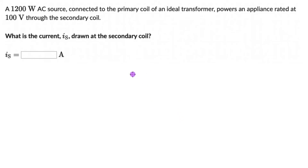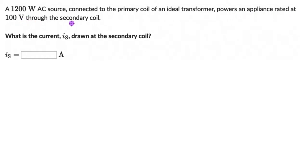Let's solve a couple of questions on transformers. Here we have a 1200W AC source which is connected to the primary coil of an ideal transformer, and that powers an appliance rated at 100V through the secondary coil. The question is to figure out the current drawn at the secondary coil, Is.